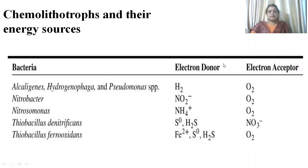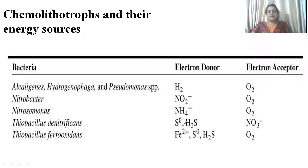The common energy sources in chemolithotrophs are hydrogen, reduced nitrogen compounds, and reduced sulfur compounds. Oxygen is usually the final electron acceptor; sometimes sulfate and nitrite are also utilized. Hydrogen, nitrite, ammonium, elemental sulfur, and hydrogen sulfide are utilized as electron donors. The electron acceptor is most often oxygen, though sometimes nitrate is also used.